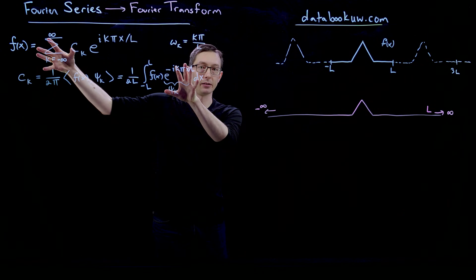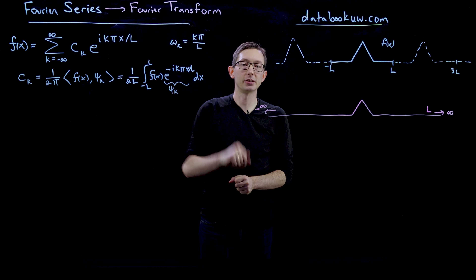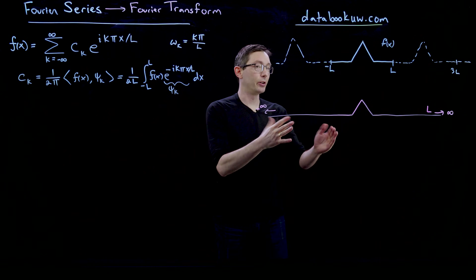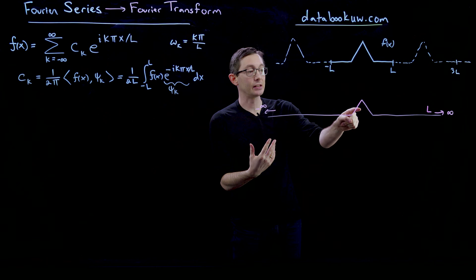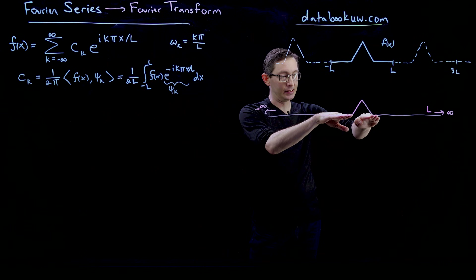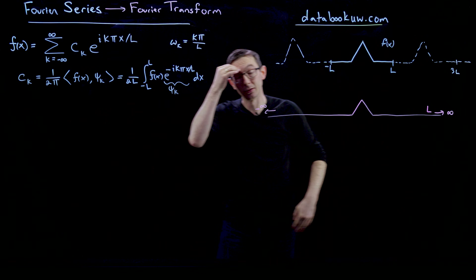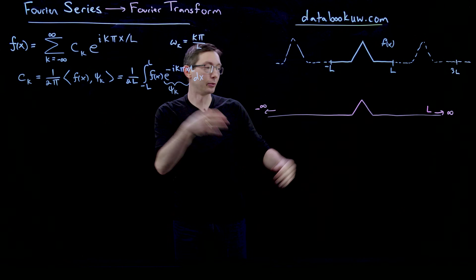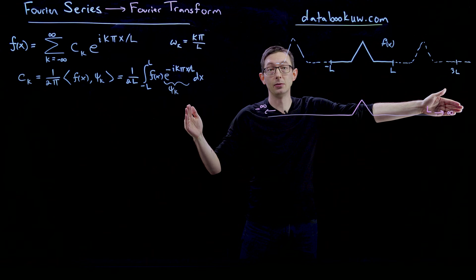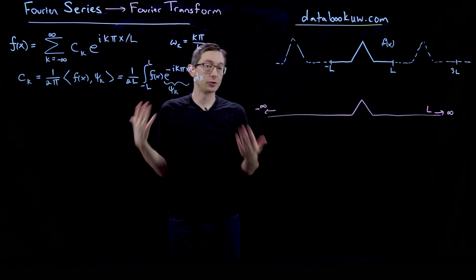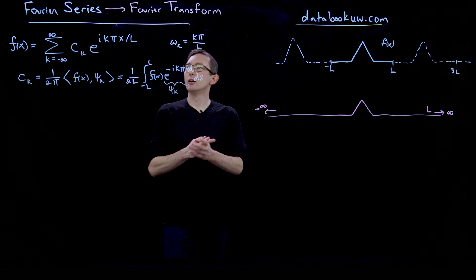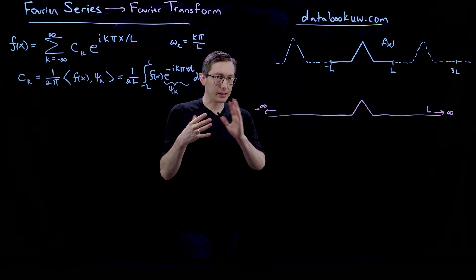We're going to take this Fourier series representation and take L goes to infinity. What that gives us is a representation of this function where it's no longer periodic forever — if it is zero at some point it stays zero — and you can represent arbitrary functions from negative infinity to infinity with this Fourier transform.